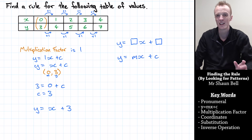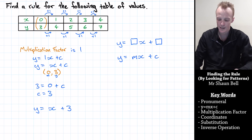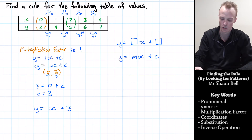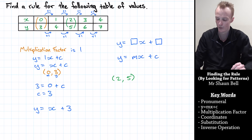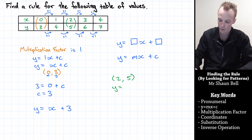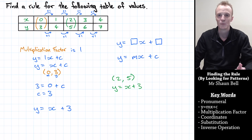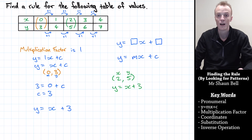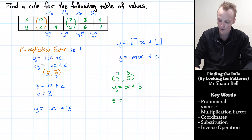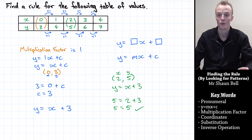We can check our rule by putting in one of the other coordinates. Let's use the middle coordinates: (2, 5). Substituting into y equals x plus 3 — when x equals 2, y must equal 5. So we get 5 equals 2 plus 3. And 2 plus 3 does equal 5, so we've found the correct rule.